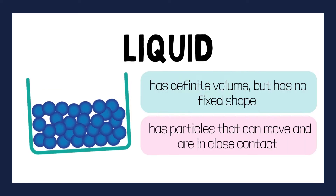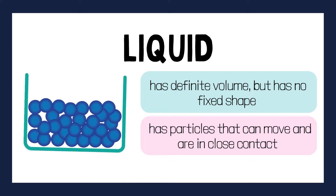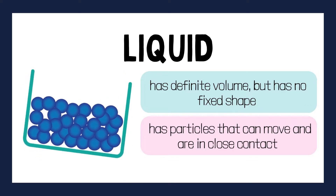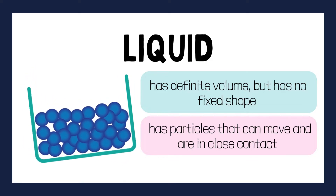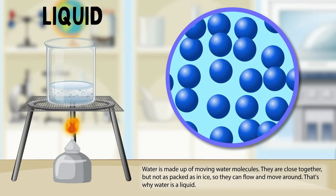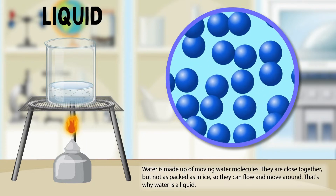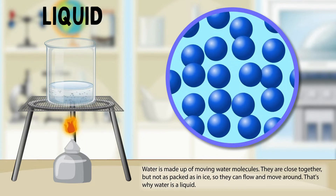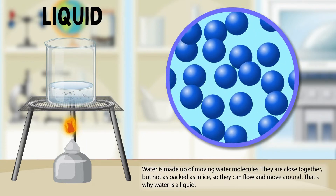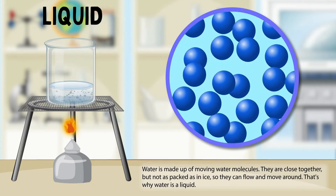Moving on to liquids. A liquid boasts a definite volume, but lacks a fixed shape. The particles in a liquid can move freely while maintaining close contact with each other.